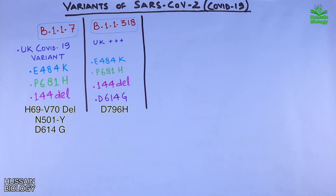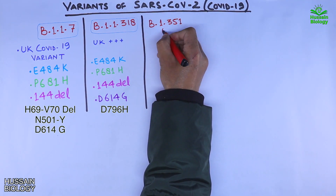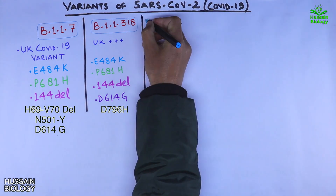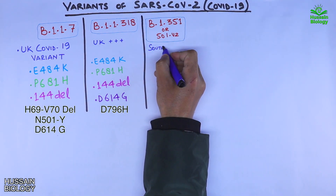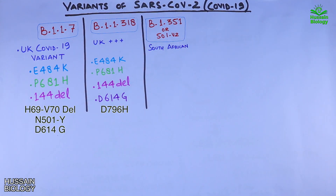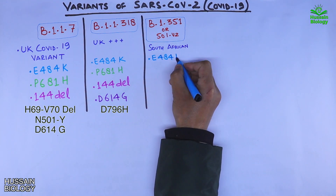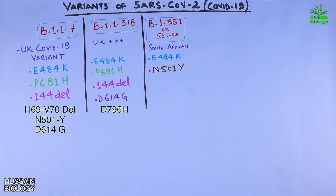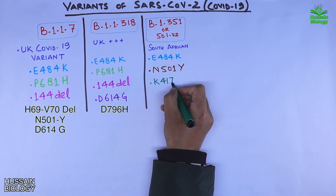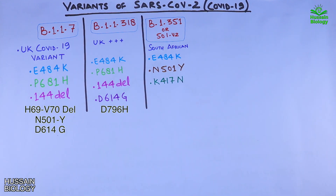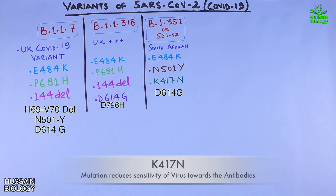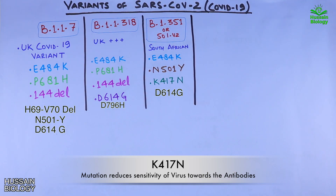Next we have the B.1.351 variant, also called the South African variant. It has mutations including E484K, N501Y, K417N, and D614G. The K417N mutation reduces the sensitivity of the virus towards antibodies and also increases the binding affinity towards the ACE2 receptor.